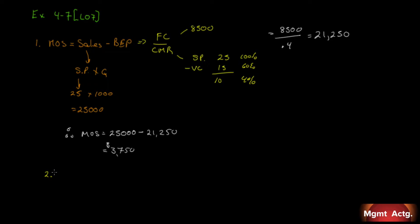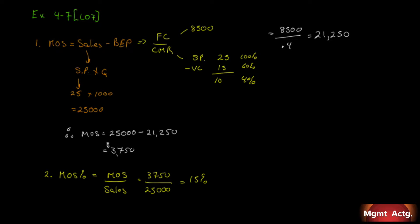Compute the company's margin of safety as a percentage of sales. So we're looking for the margin of safety percent, which we know is margin of safety divided by sales. Well, we've already calculated the margin of safety, $3,750. And in calculating margin of safety, we've calculated sales at $25,000, which will give us 15%. There's 4.7.